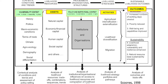Within assets, Scoones calls them capitals. Natural capital is your land, water and soil. Financial capital is money — what economic resources do you have to make a living? Human capital refers to ourselves and our bodies: what kind of skills do we have, what kind of education, how is our health, do we have a disability? Social capital is our connections and networks — do we know somebody in government who can help with resources or training? The policy and institutional context includes community-level institutions like caste, ethnicity, tribe or gender, as well as government and non-government organizations.